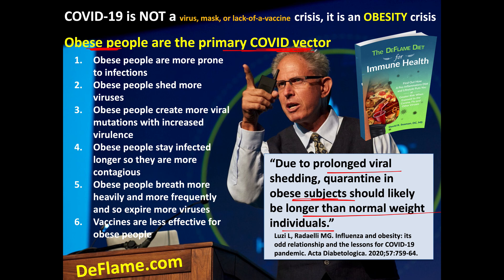We're told in the news that obese people are at greater risk for a bad case of COVID-19, which is true — but they are also the primary COVID vector. You can verify this by typing these terms into your browser search and numerous scientific papers will appear. This is why COVID-19 is not a virus crisis, not a mask crisis, not a lack-of-vaccine crisis, but without question it is an obesity crisis and a hyperglycemia crisis — a metabolically obese crisis. For the very elderly, it's also an inflammation scenario.